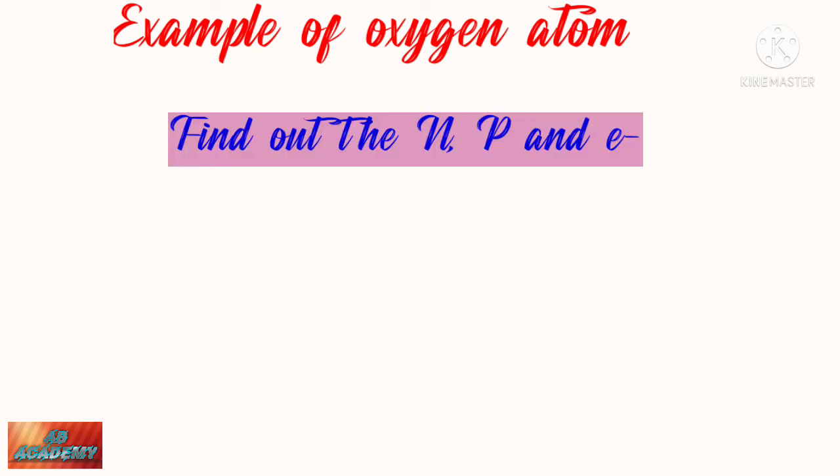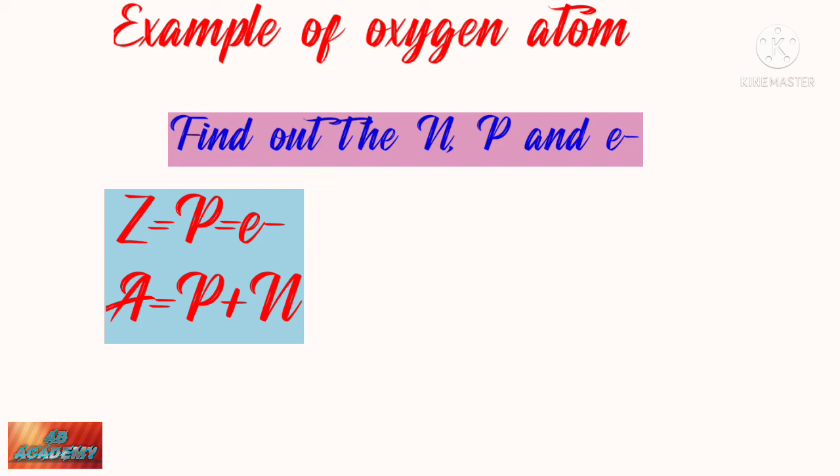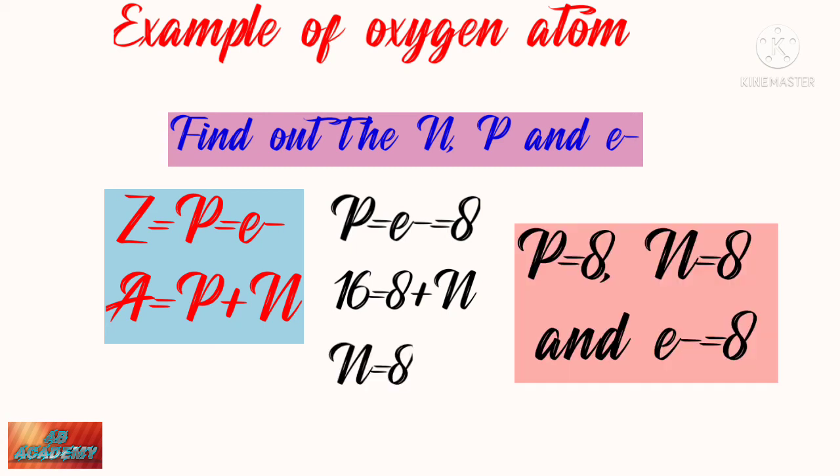If you want to find out how many neutrons, protons and electrons are in it, you can use a formula. Z equals P equals e minus. Z is the atomic number, so you can write that P equals e minus equals 8. Now let's find out the number of neutrons. You know the atomic weight and number of protons in oxygen atom. Put the values in formula: 16 equals 8 plus N. By arranging the formula you get N equals 8. So this element has 8 protons, 8 neutrons and 8 electrons. This is a simple method to find the number of protons, neutrons and electrons present in an atom.